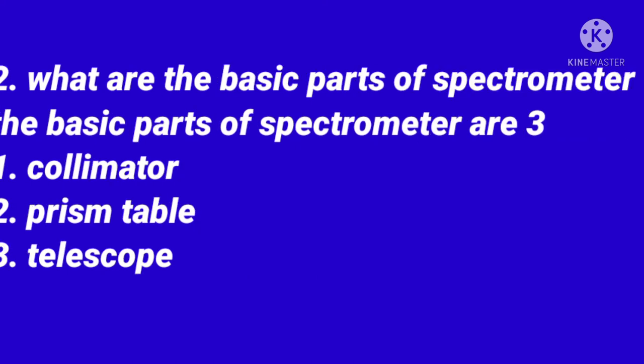What are the basic parts of a spectrometer? The basic parts of a spectrometer are three: one is the collimator, the second is the prism table, and the third one is the telescope.